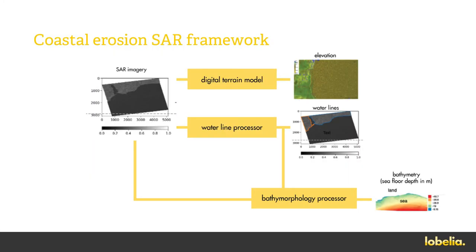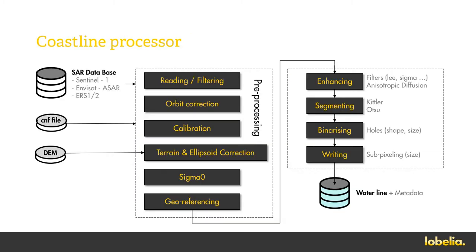Two processors based on SAR imagery have been developed to extract digital terrain model, waterlines, and bathymetry profile in an automatic fashion. Turning space-borne SAR data into shoreline tracking requires a sequence of computer vision steps. The SAR backscatter image goes successfully through a denoising operation followed by segmentation to separate land from water pixels by thresholding. The noisy binary mask is then repaired with several computer vision methods of closing and opening.